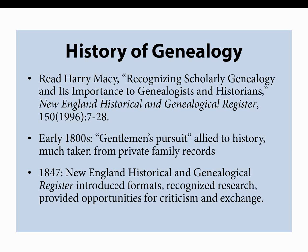In 1847, the New England Historical and Genealogical Register was established and it became the standard periodical for genealogy. It introduced different formats, recognized good research, and provided opportunities for people to share, criticize each other, and exchange information. But the number of people who would have read this information is relatively small compared to the number who would have written their family genealogies. So in judging genealogies, you're going to need to know experience levels.